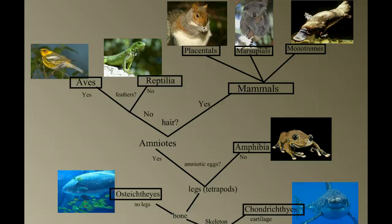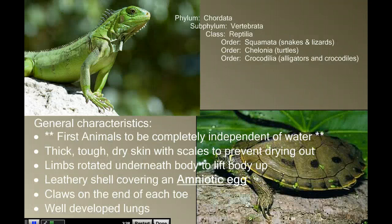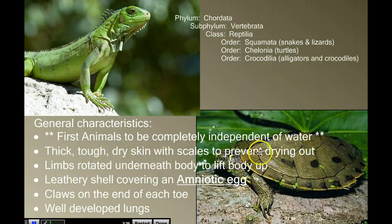As we move from the water — everything down here is in water — amphibians are kind of in between because they have to start their life in water and then move on to land. But everything from here and up are terrestrial animals, even those that live in and around water. So let's look at some of these characteristics that relate to reptiles being successful on land. They have a thick, tough, dry skin with scales to prevent drying out — we're going to prevent desiccation.